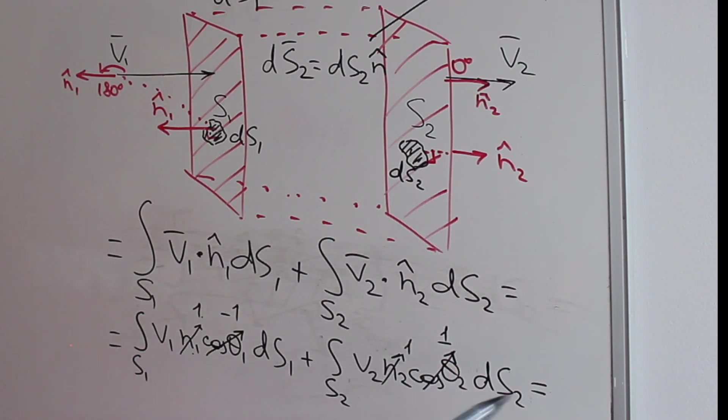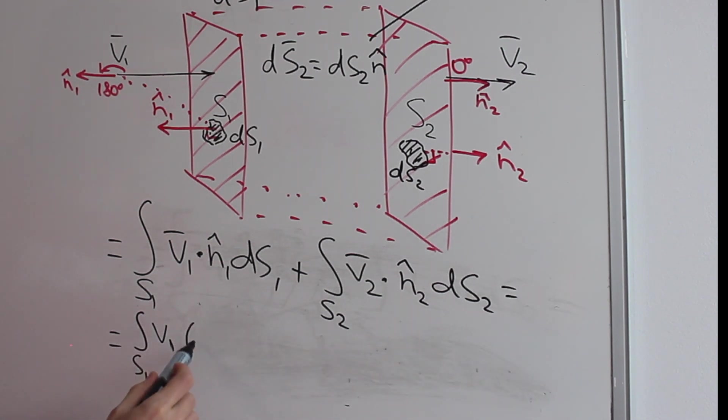All right, so now we can rewrite this integral in a simpler form. Remember it was v1 multiplied by minus 1 multiplied by ds1. So let's keep minus integral s1 v1 ds1 and integral over s2 of v2 ds2 because we had 1 multiplied by 1 between them. Now we can bring this negative 1 outside of the integral.